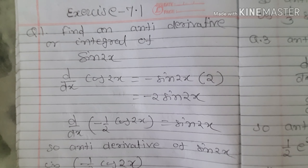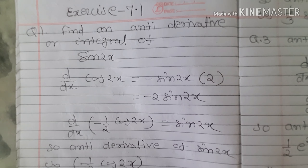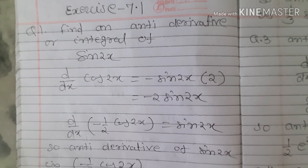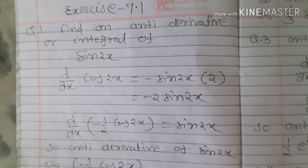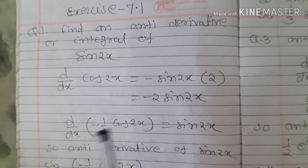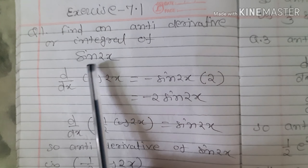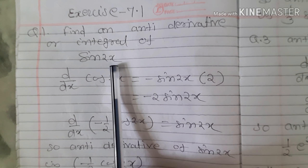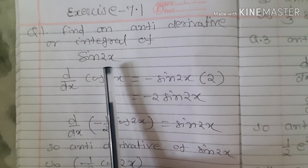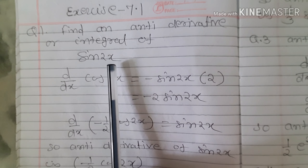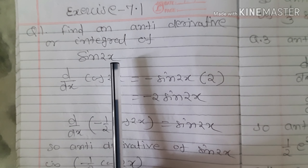Now we are going to solve Exercise 7.1 on page number 299. Question number 1: find an antiderivative or integral of sin 2x by the method of inspection. By the method of inspection, we will find a function whose differentiation is equal to sin 2x, since differentiation and integration are inverse of each other.